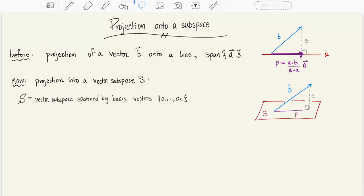Now we're going to do something more general. Instead of projecting onto a line which is the span of a single vector little a, we're going to be projecting into an entire vector subspace S. So S could be a plane or it could be something higher dimensional but we're going to think of it as being a vector subspace which is spanned by a set of vectors a1 through an.